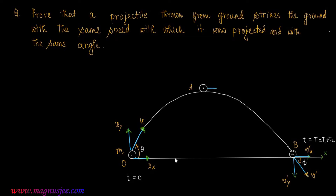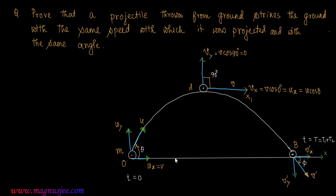At the highest point A, the projectile has velocity V along the tangent Ax1 parallel to the ground. The rectangular component of this velocity V in the vertically upward direction is Vy, which equals V cos 90° = 0, because Vy makes an angle of 90° with V. The rectangular component along Ax1 is Vx, which equals V cos 0° = Ux = U cos theta. Here Uy equals U sin theta and Ux equals U cos theta at point O.